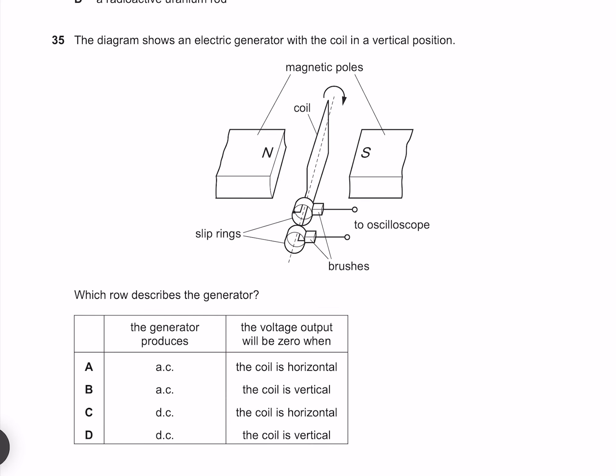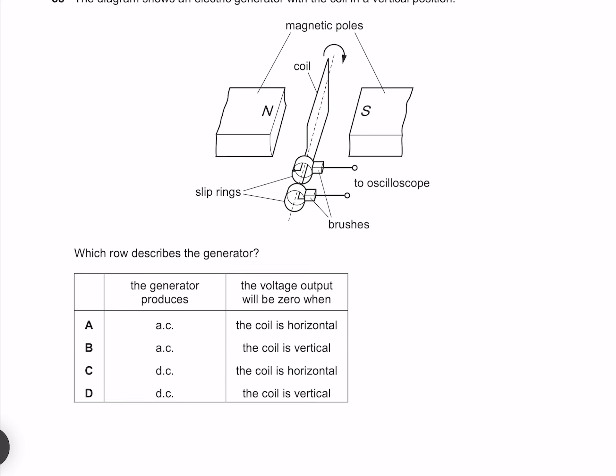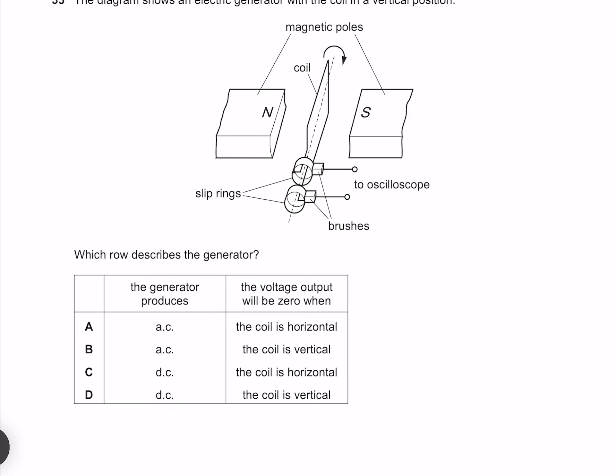The diagram shows an electric generator with the coil in a vertical position. Which row describes the generator? As our coil rotates the current is going to alternate direction, which means we must have alternating current. The voltage is going to be zero when our coils are not cutting across our magnetic field, which occurs when their velocity is parallel, which is the case when our coil is vertical. So our answer must be B.